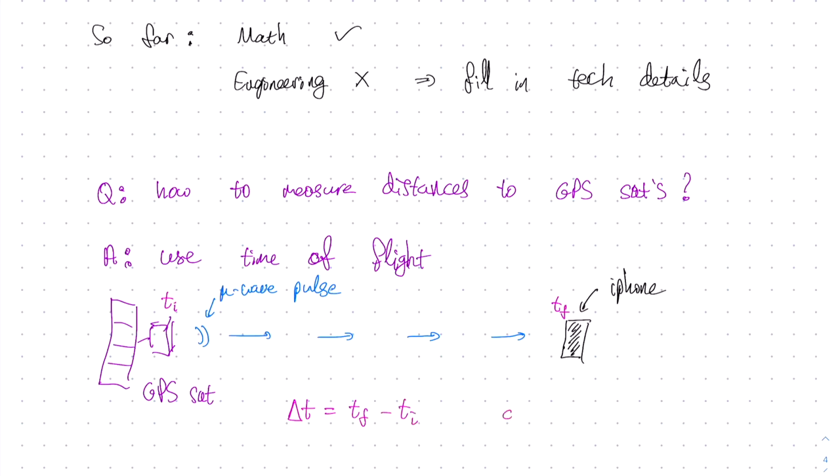and then we can calculate the travel time, delta t, by subtracting Tf, the time received, from Ti, the time at which the pulse was sent, and then calculate the distance using the usual formula, that the distance is equal to the speed of light, C, multiplied by the time of travel, delta t.